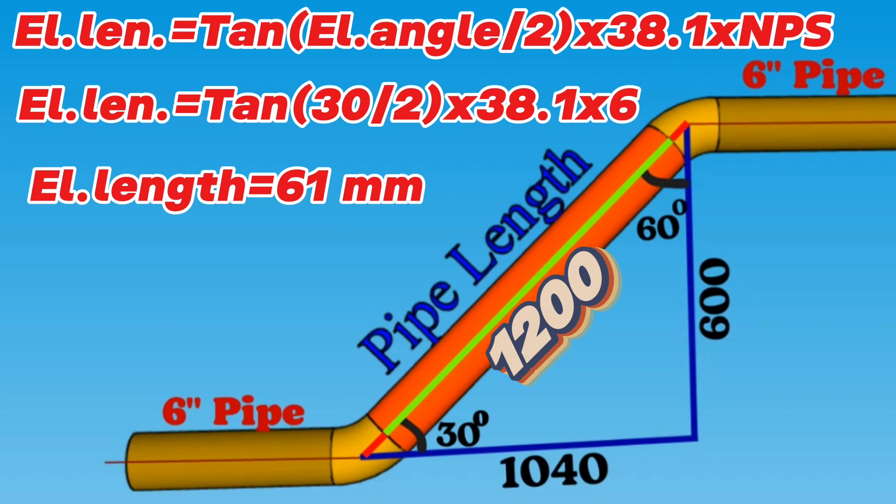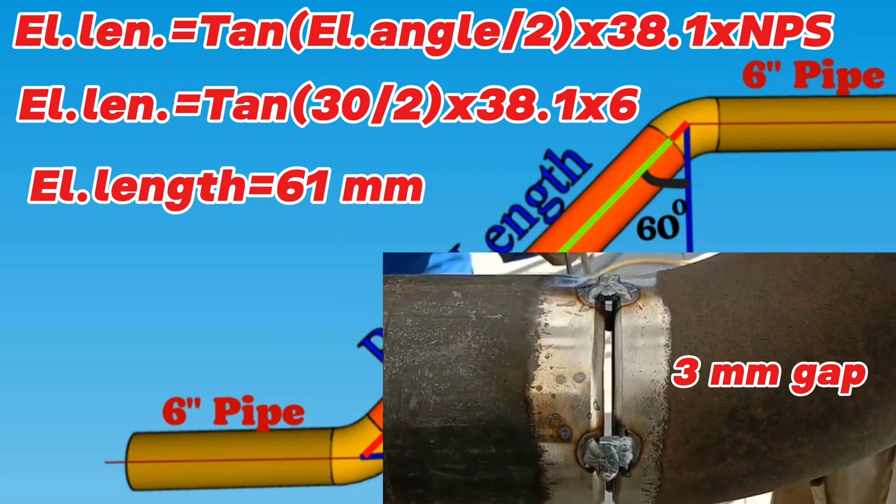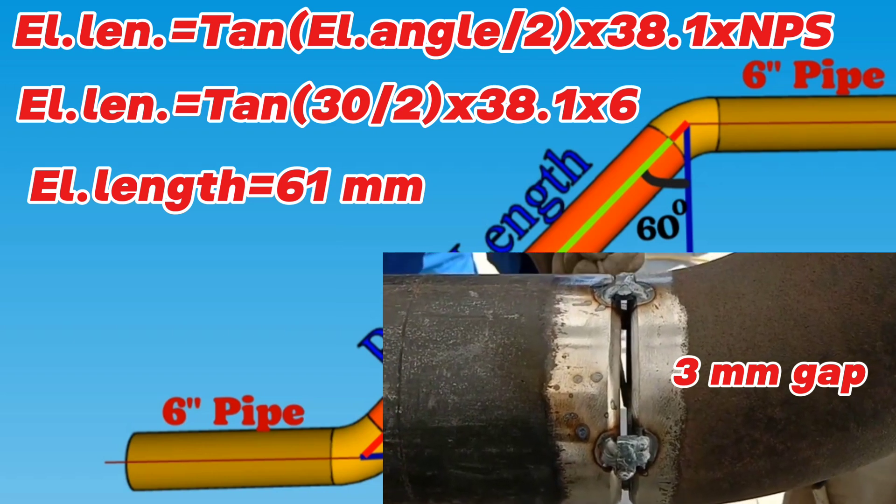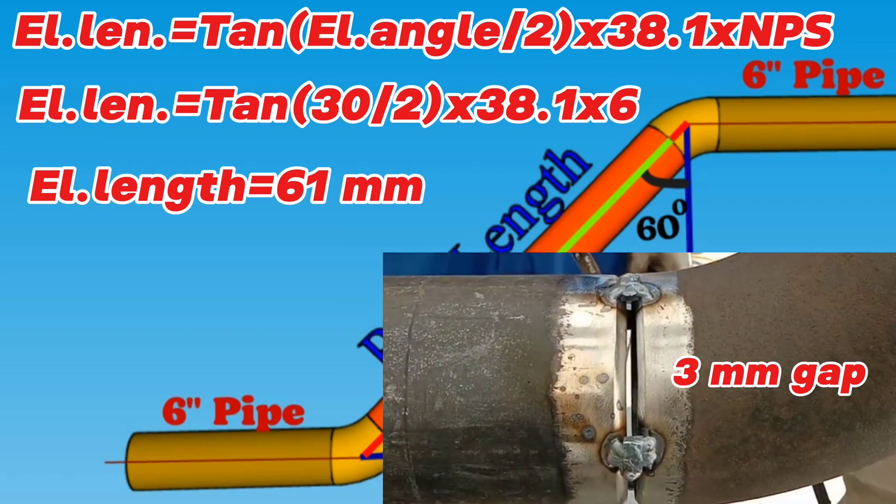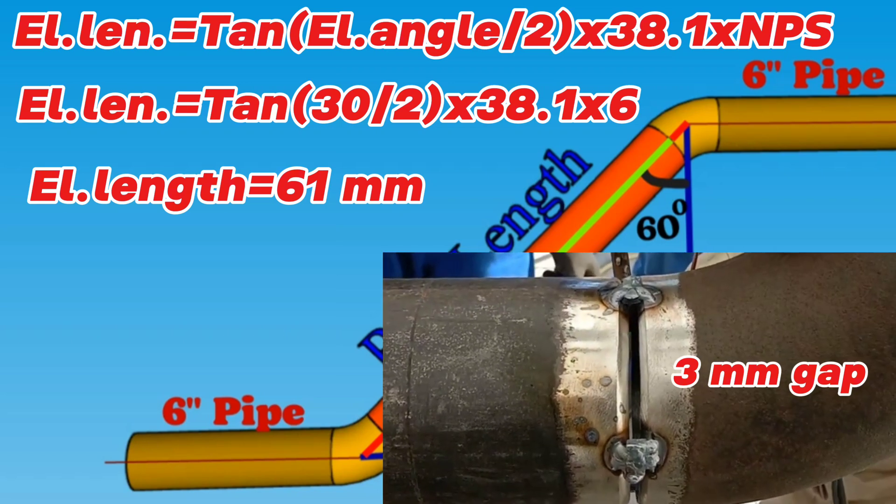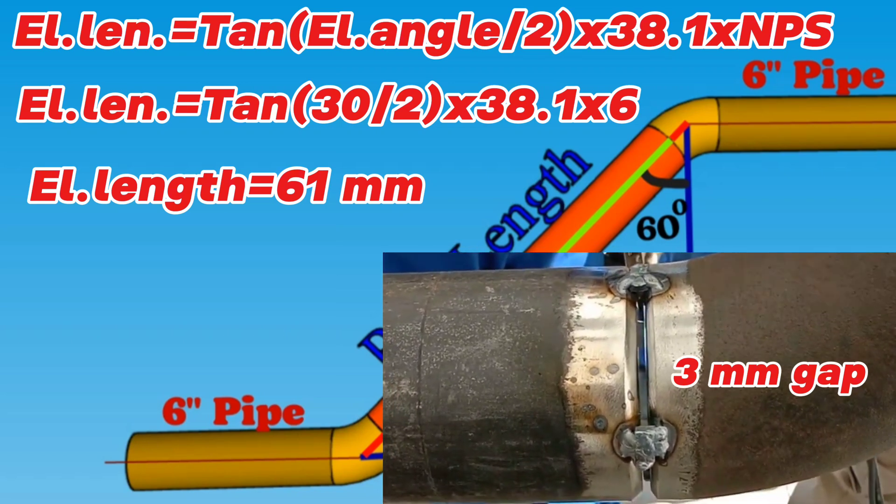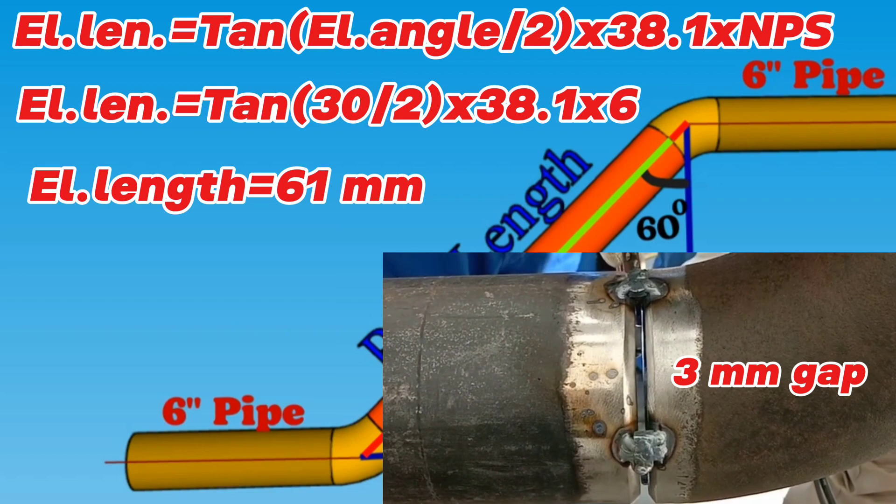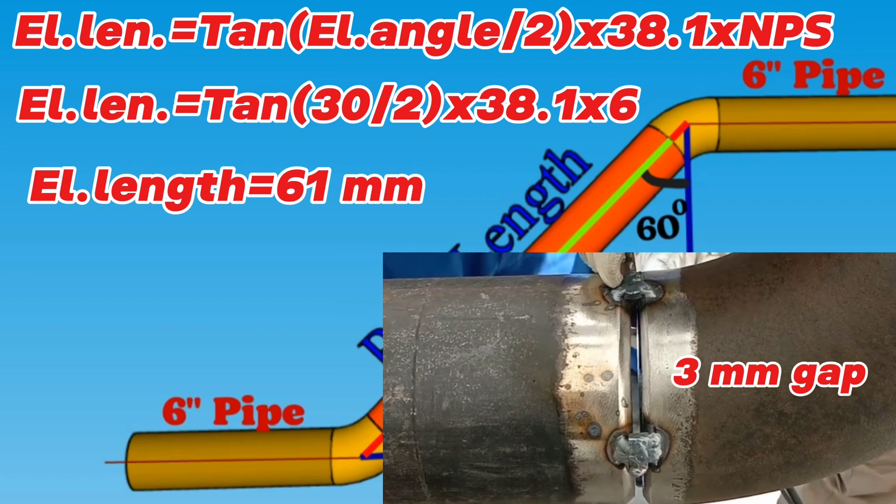Now, look at the fit-up process pipe elbow to pipe in the pipelines. During fit-up, gaps are opened between the pipe fittings to be welded, a gap of approximately 3 millimeters. Having this gap is for better root welding. We should take these gaps into account when calculating the length of the red pipe section.